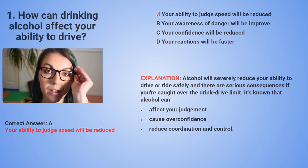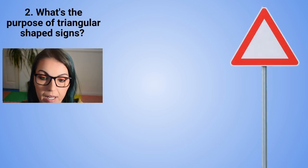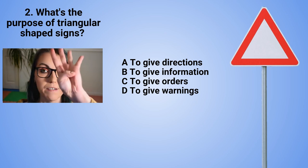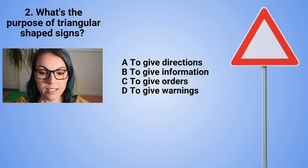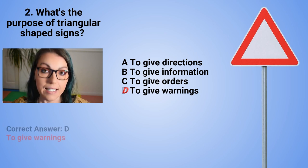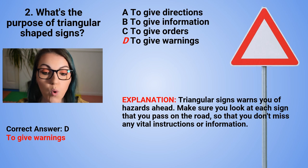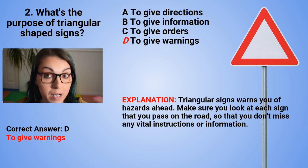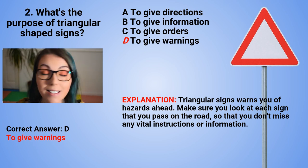Question 2: What's the purpose of triangular shaped signs? A. To give directions. B. To give information. C. To give orders. Or D. To give warnings. The correct answer is D — to give warnings. Triangular signs warn you of any kind of hazard ahead. You need to make sure that you check each sign you pass on the road so that you don't miss any vital instruction or information.